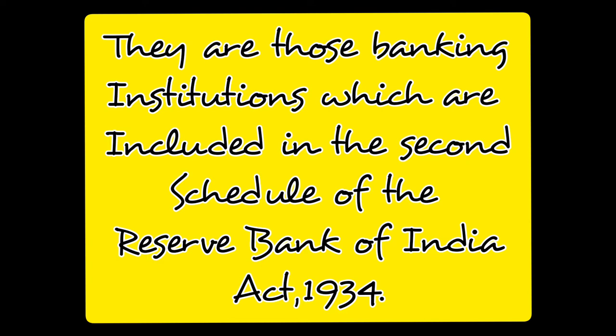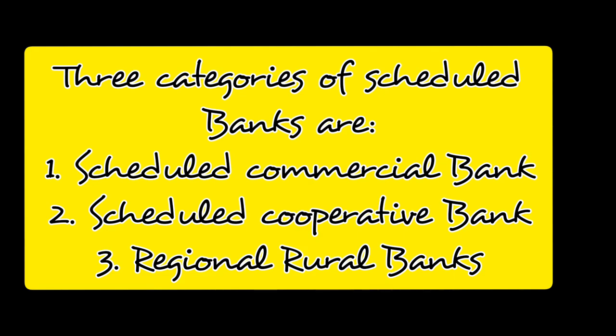Number 3 — the bank must be a corporation or cooperative society and not a partnership or single owner firm; that is, the bank must be a cooperation of a certain group of people. So these three conditions should be fulfilled to become a scheduled bank. There are three categories of scheduled banks.